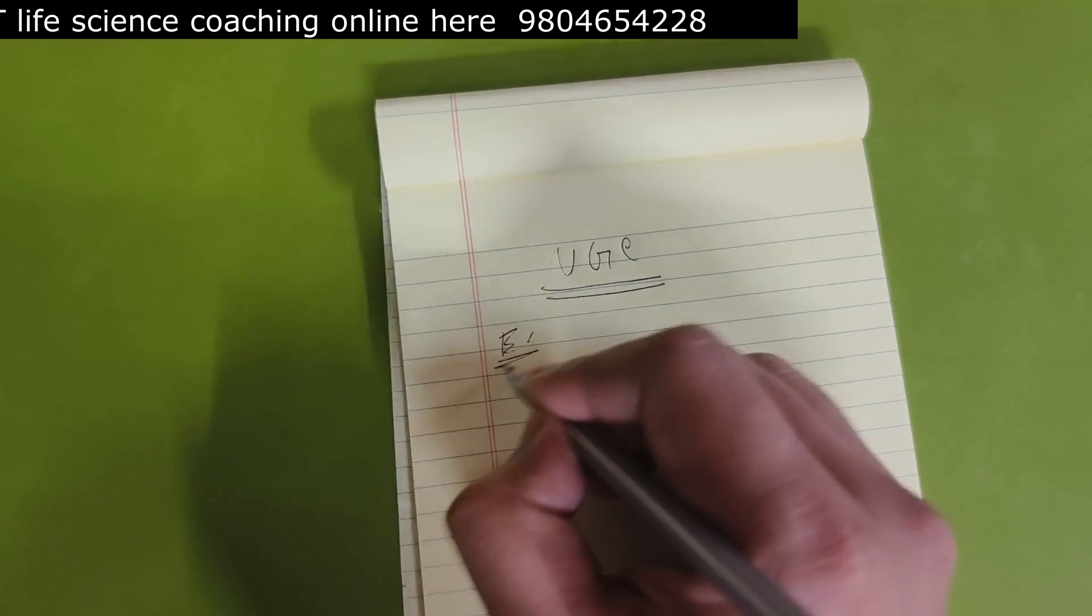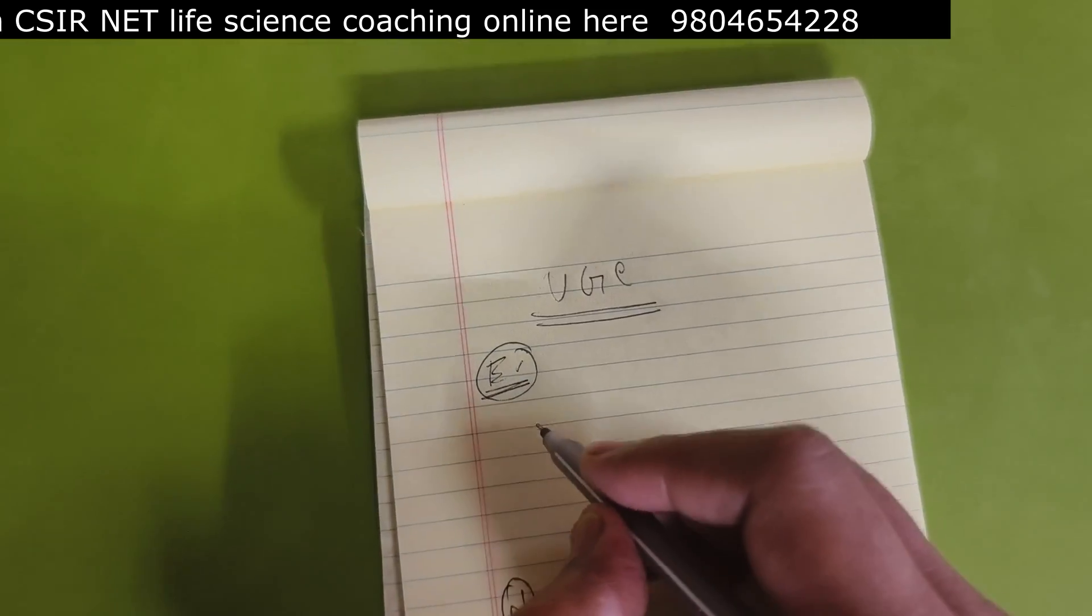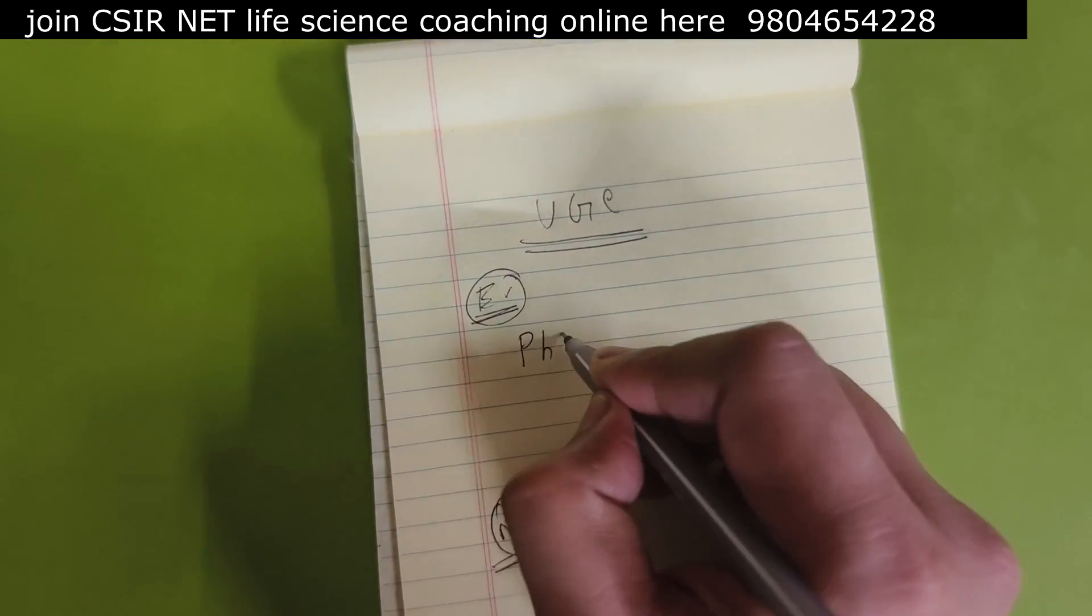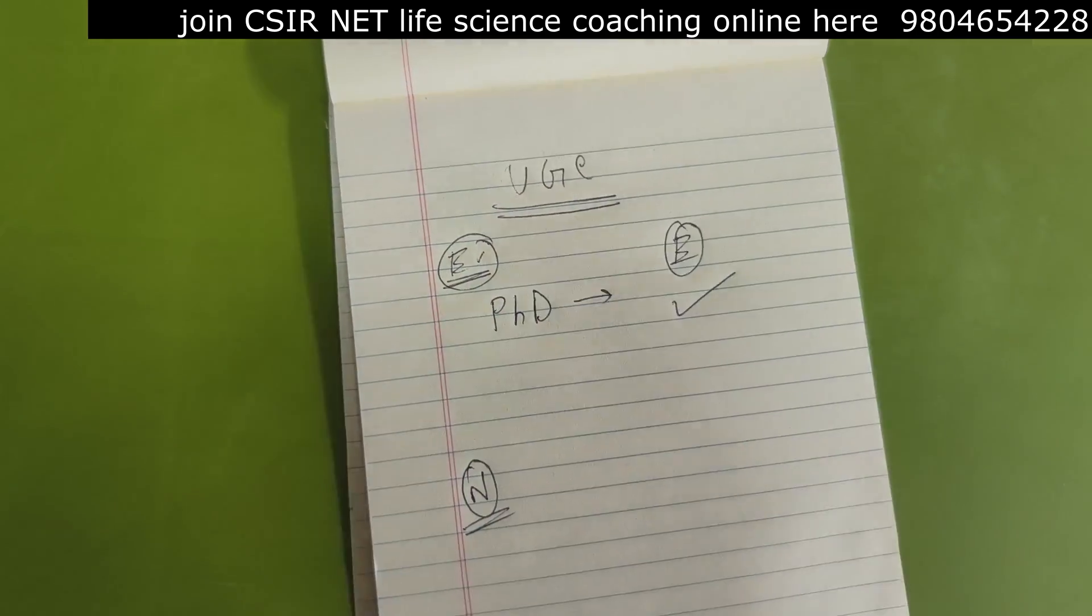First, what happens? So this is earlier, what happens earlier, and this is what will be happening now. So earlier what happened is that if you have a PhD, are you eligible or not? Yes, you are eligible for assistant professor.